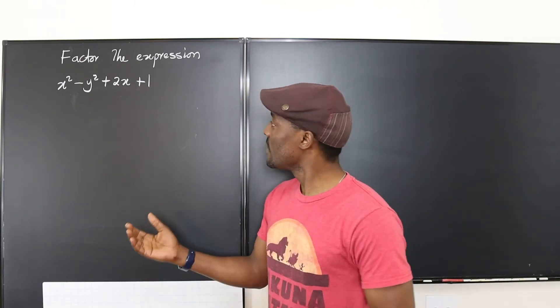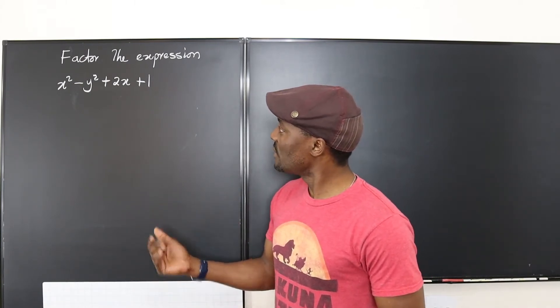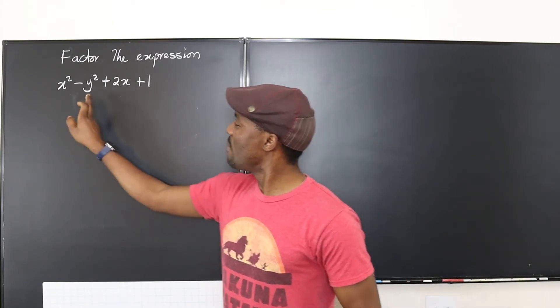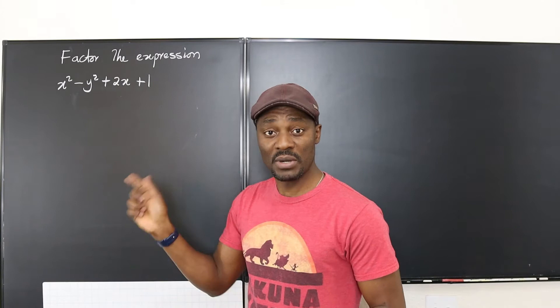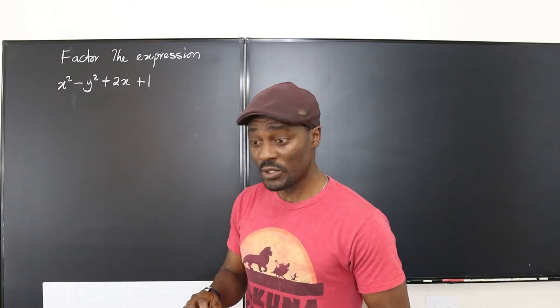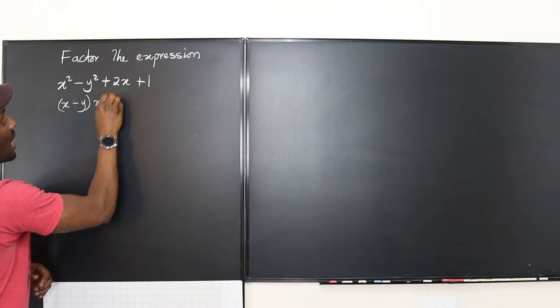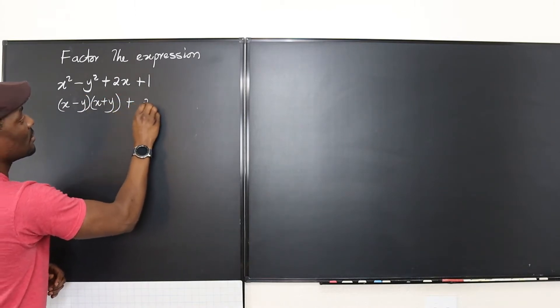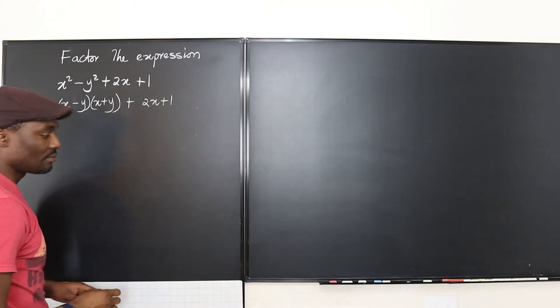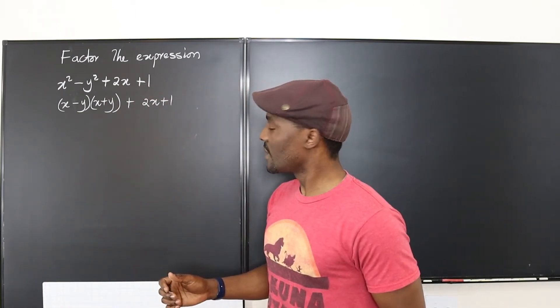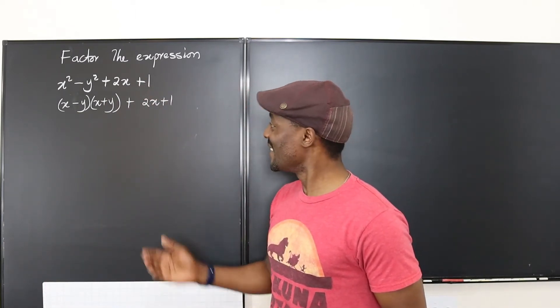For example, if I was given this to factor, I would quickly remember difference of two squares and apply it. So I'm going to say this is going to be (x - y)(x + y) + 2x + 1. It doesn't help me because this is not factored.